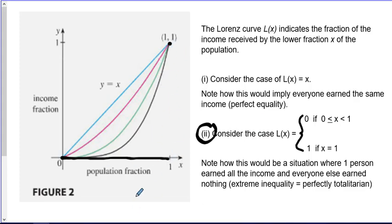In this case, we have a situation where there was one person earning all the income, and everyone else earned nothing, and we could call this extreme inequality, or something we could refer to as perfectly totalitarian.